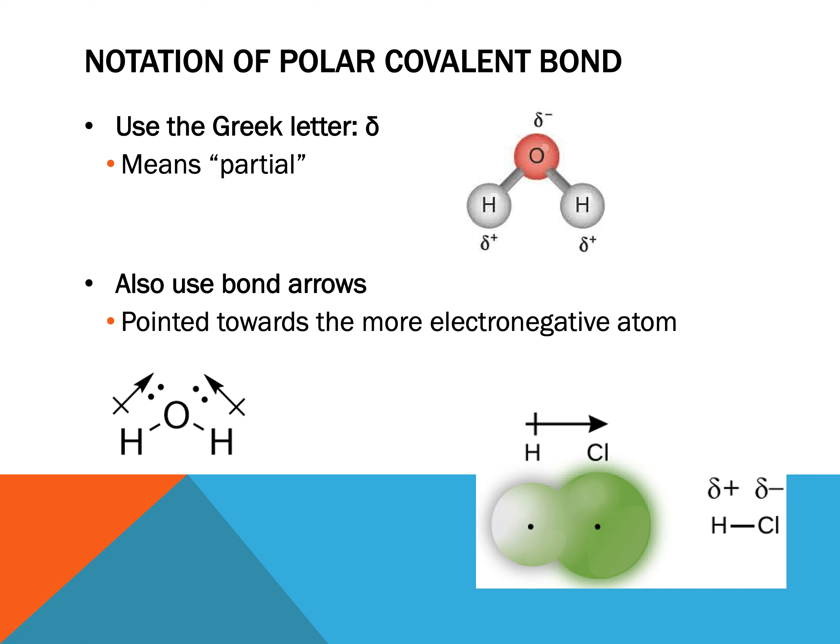Now other times, instead of using this Greek symbol, we just use bond arrows. So the arrow points towards the more electronegative atom. It shows that the electrons are being pulled up towards my oxygen here, or the electrons are being pulled towards my chlorine in this example here. So we almost have like a little positive where the positive atom is, and then the electrons are being pulled this way.